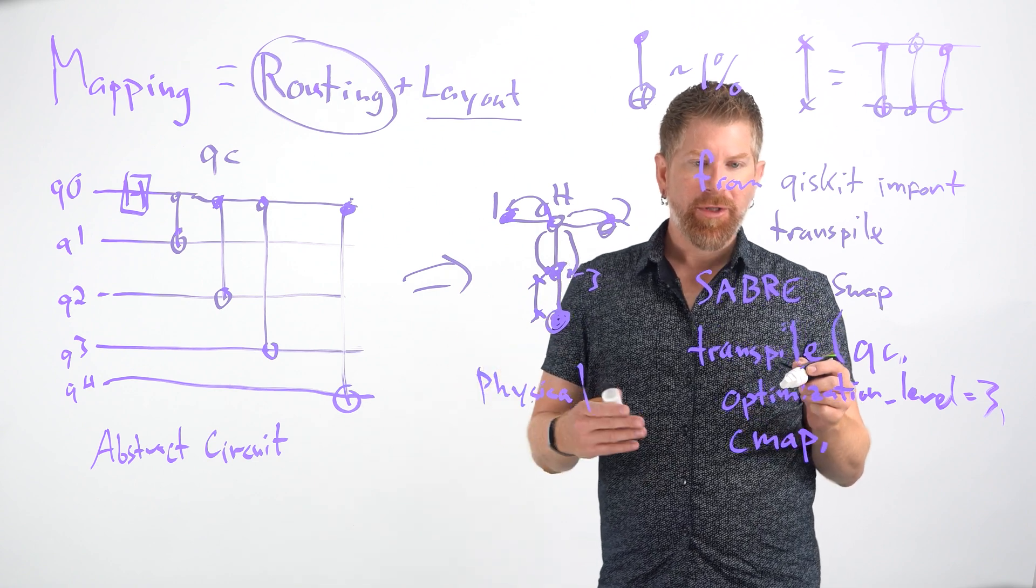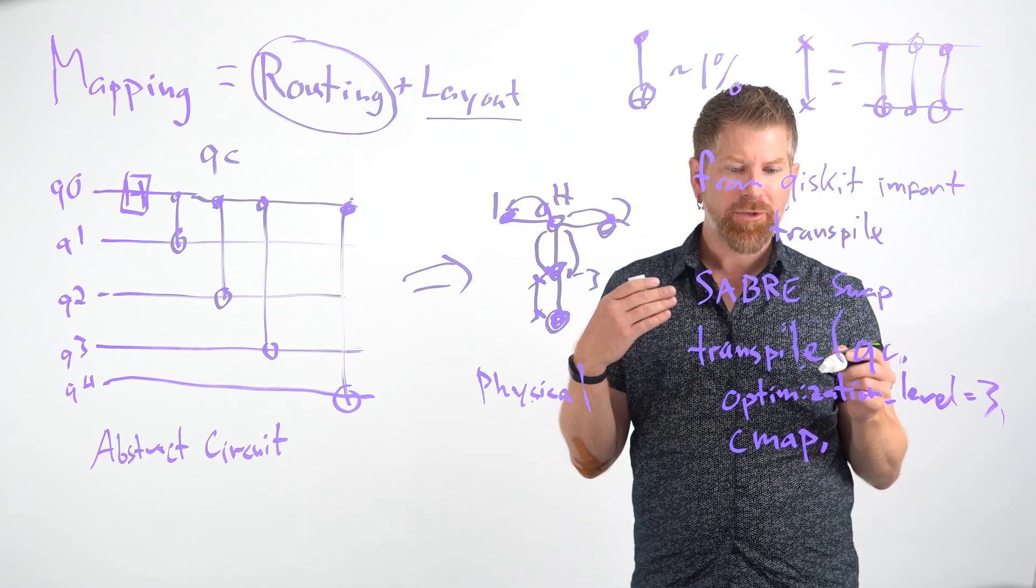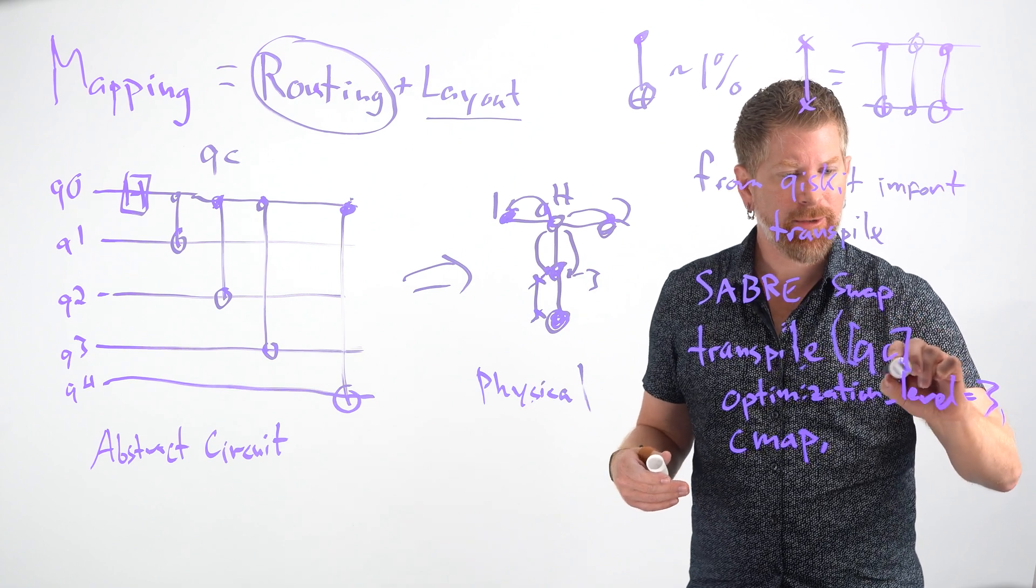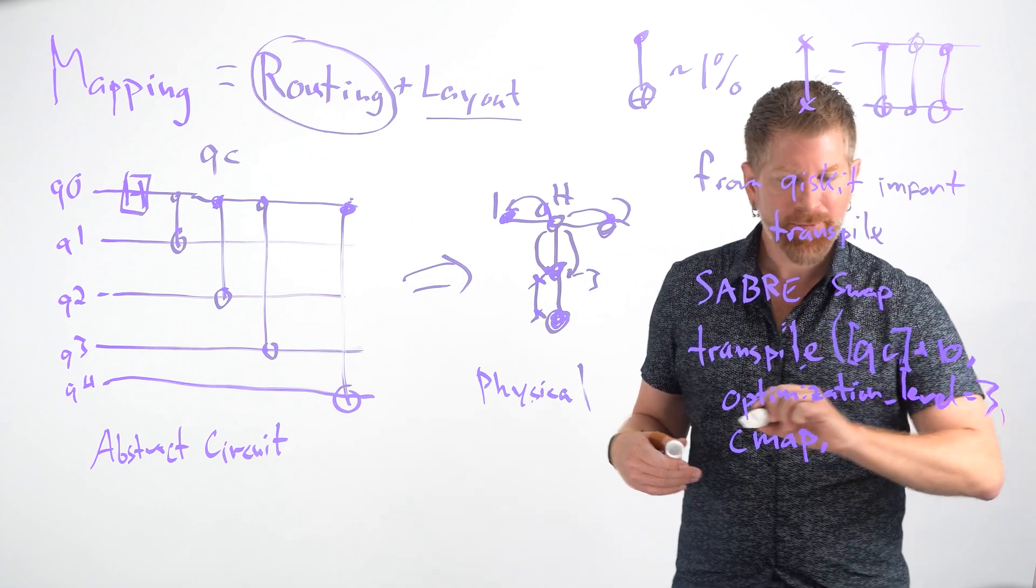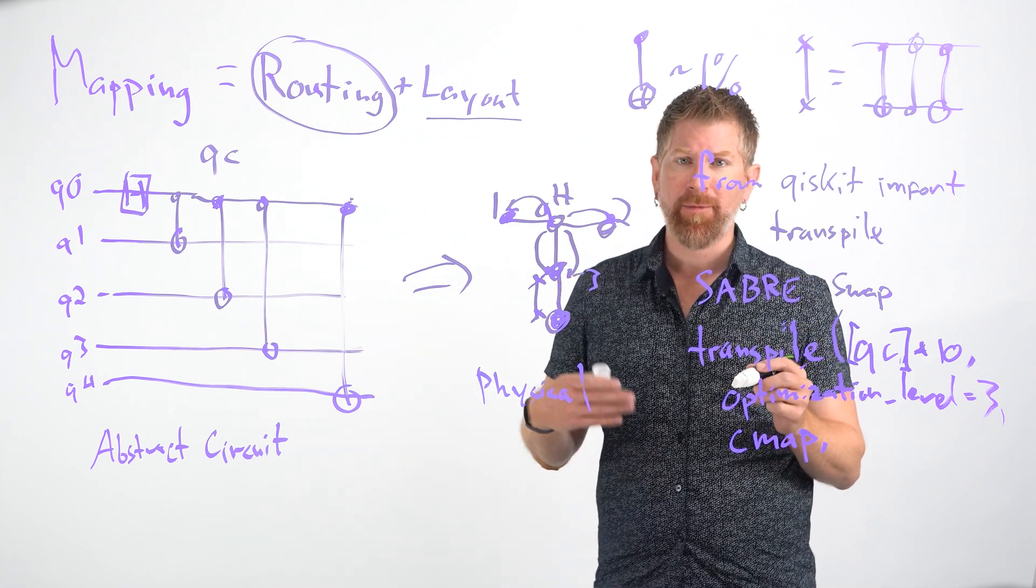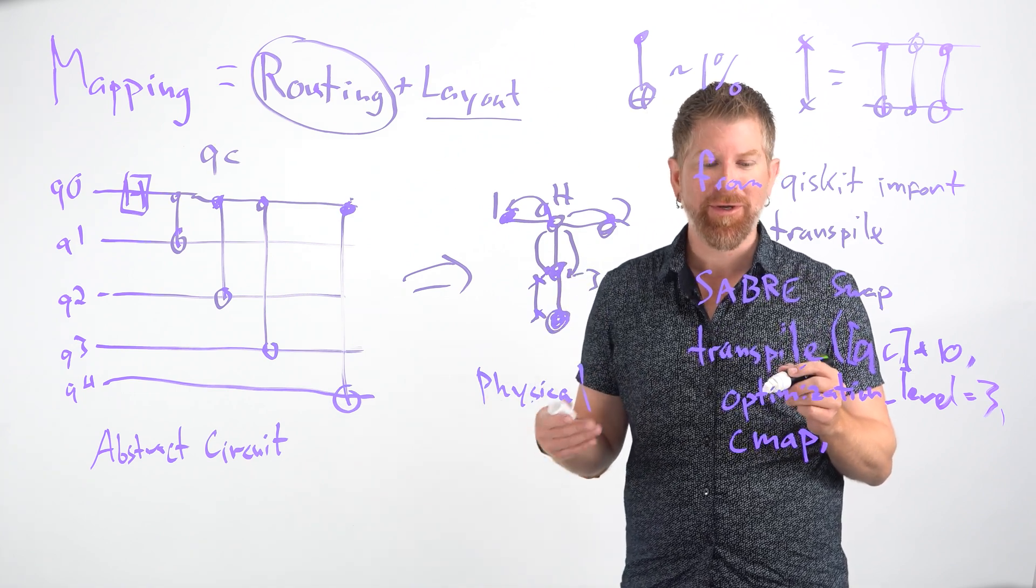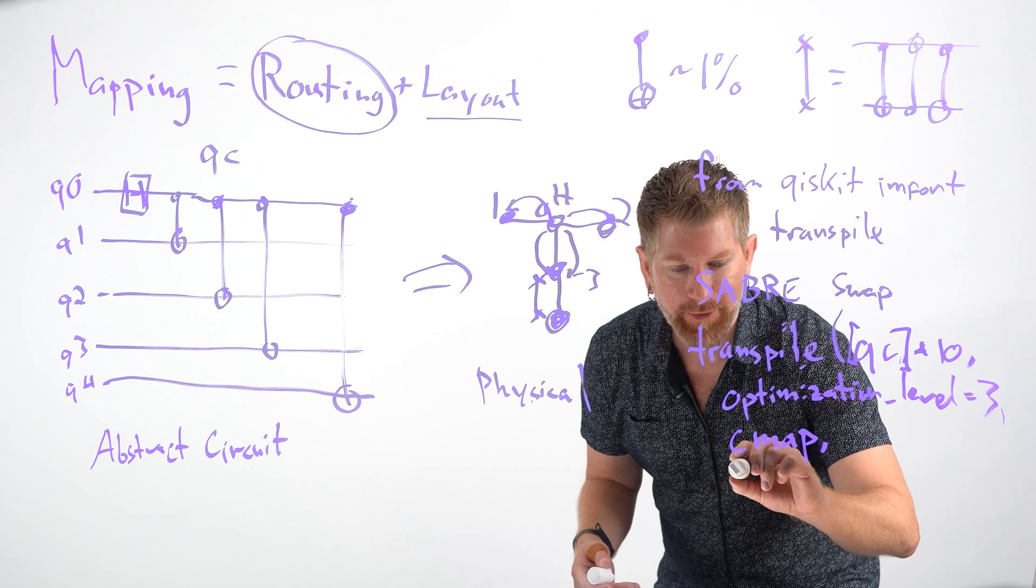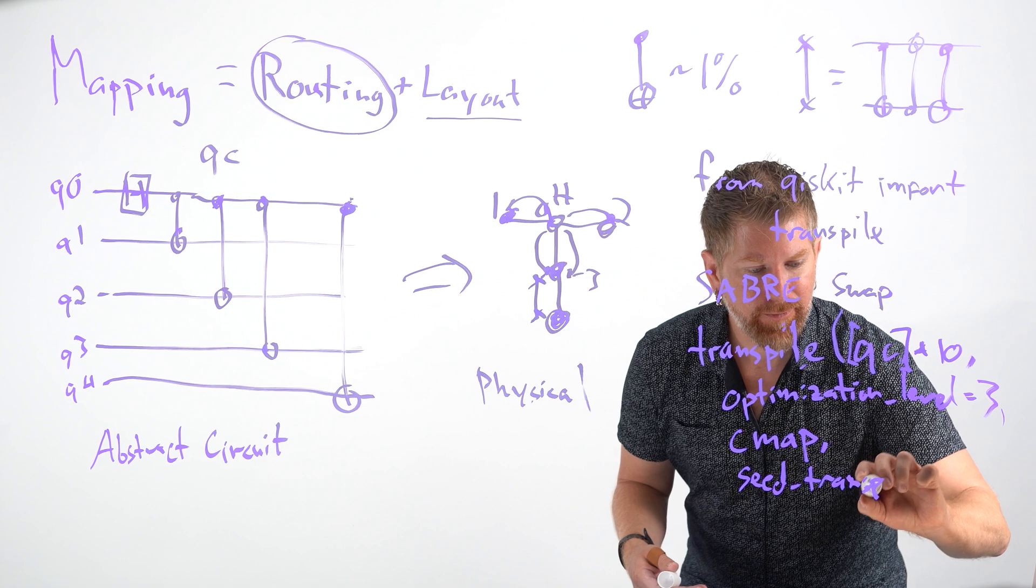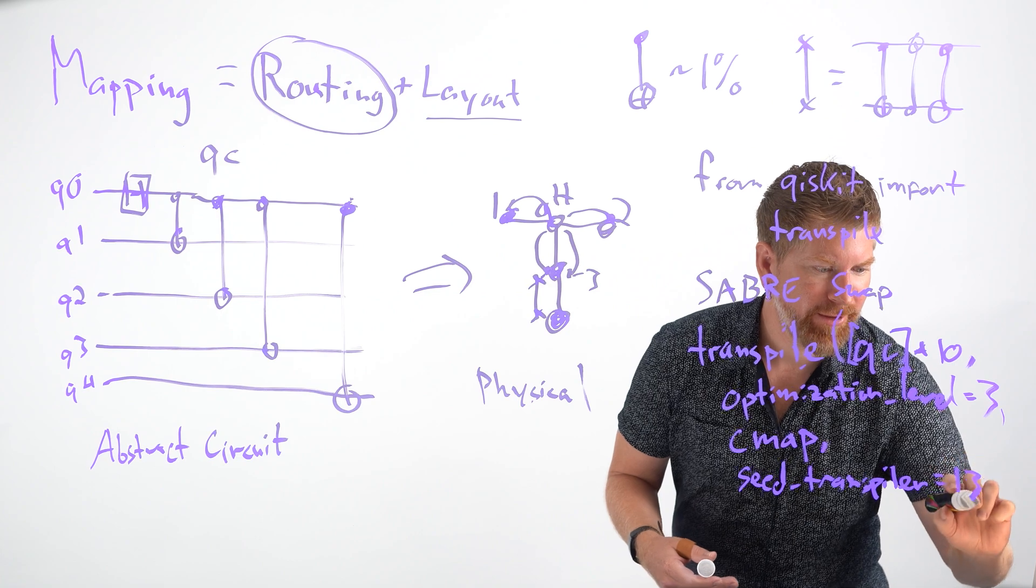And from here, we should note that this is a stochastic algorithm. So a lot of times, we might want to just do this a bunch of times to our quantum circuit, and then take the best results. So we can take our quantum circuit, multiply it by 10, and use that instead. And because it's also stochastic, you might want to keep track of being able to reproduce your results. So you might want to reset your pseudo-random number generator. And you can do that with seed transpiler equals 13, say.